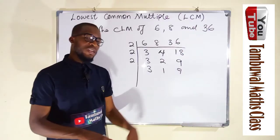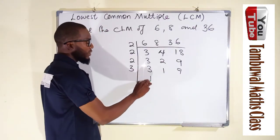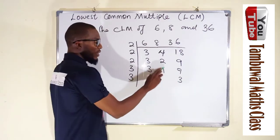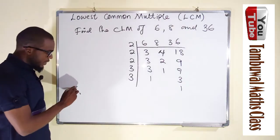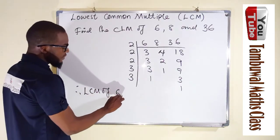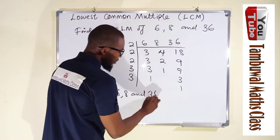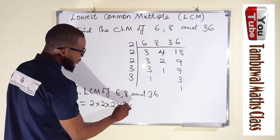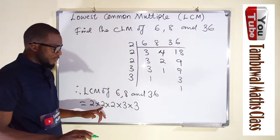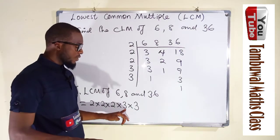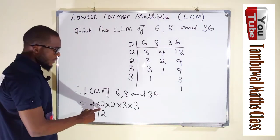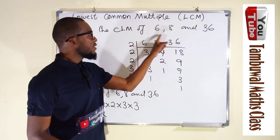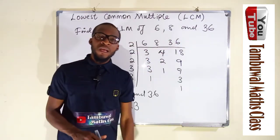Two can no longer go into any of these, so we try the next prime number, three. Three goes into three one time, this is already one, and three goes into nine three times. We still have three remaining; three goes into three one time, and the rest are already one. Therefore the LCM of six, eight, and thirty-six equals two times two times two times three times three, which is four times two times three times three, giving us 72. So 72 is the smallest number that six, eight, and thirty-six can all go into without a remainder.